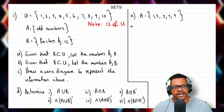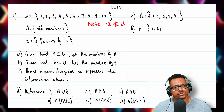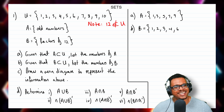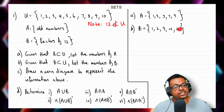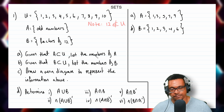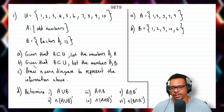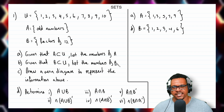So for part B, set B contains 1, 2, 3, 4, and 6. We stop here and do not include 12 because 12 is not a member of the universal set. That completes part A and part B where we list the members of set A and set B.